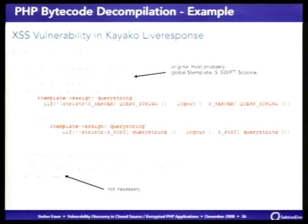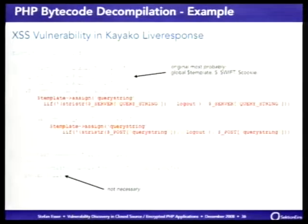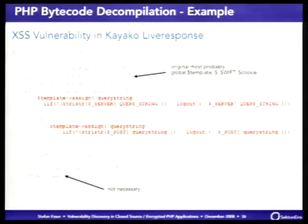One place I tried this was Kayako LiveResponse, one of the shareware products I mentioned. In Kayako only two files are encrypted. The customer said to audit it anyway — he thought there wouldn't be a security vulnerability in just two functions. He was very wrong. There was a cross-site scripting vulnerability: it outputs a POST variable called query_string directly to the template without HTML encoding. And the interesting thing is it's within the encrypted file — even if you know about it you cannot protect yourself against it, because you cannot change the source code. You need to contact Kayako, and if you're lucky they won't sue you for knowing about it.